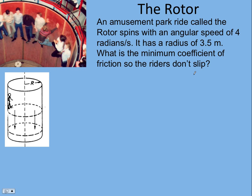Let's look at a sketch of the rotor. You can see a cylinder spinning about a vertical axis. Here's the rider after the floor has dropped. We want to draw a free body diagram of the rider.